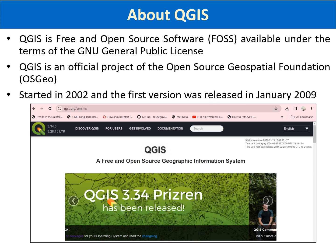About QGIS — it is a free and open source geographic information system software, which can be used for creating, editing, visualizing, analyzing, and publishing geospatial information. It is available under the terms of the General Public License. It is an official project of the Open Source Geospatial Foundation, which was initiated in the year 2002, and the first version of QGIS was released in January 2009. By open source, we mean that its source code is available freely and can be viewed and modified as per the requirement for performing any specialized task.